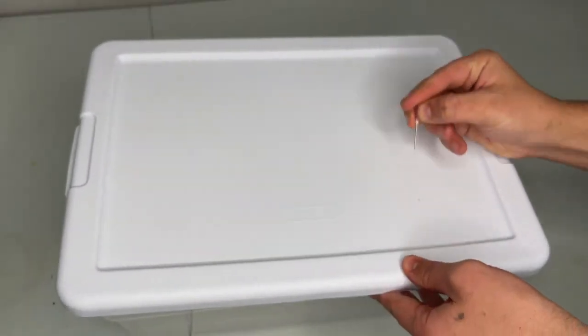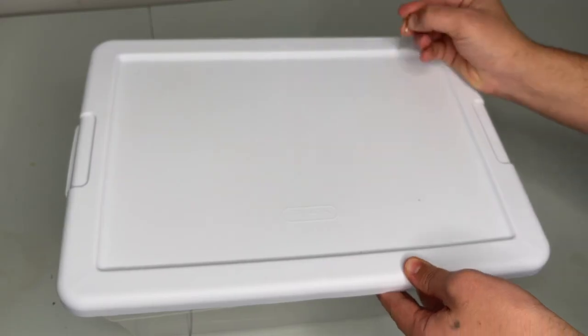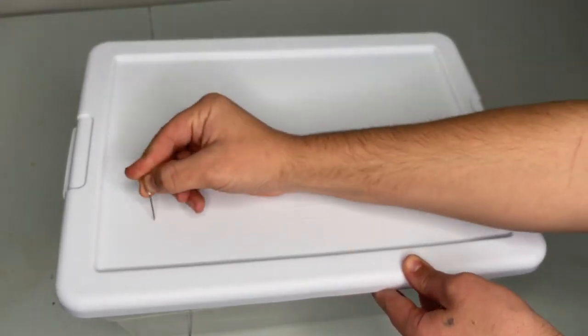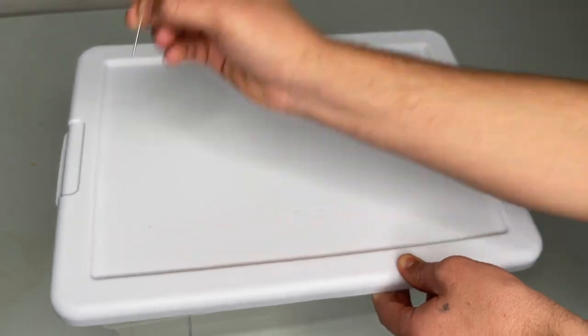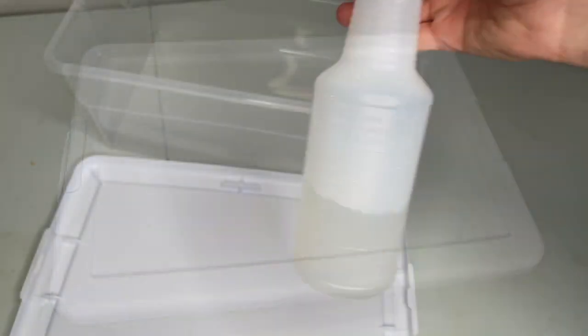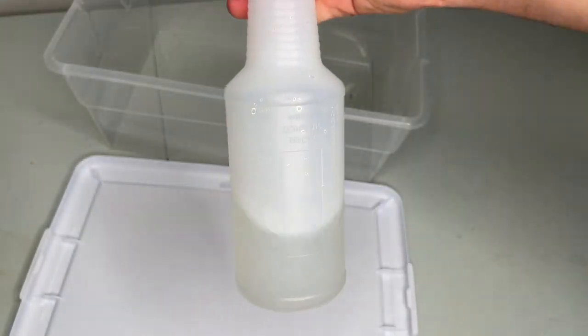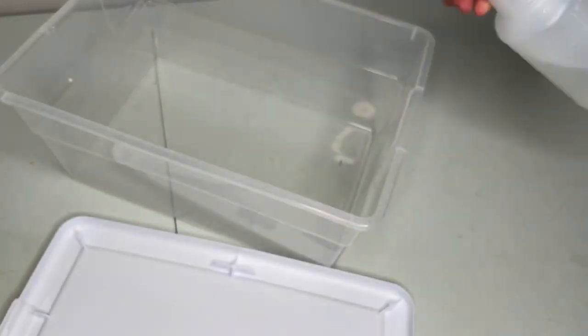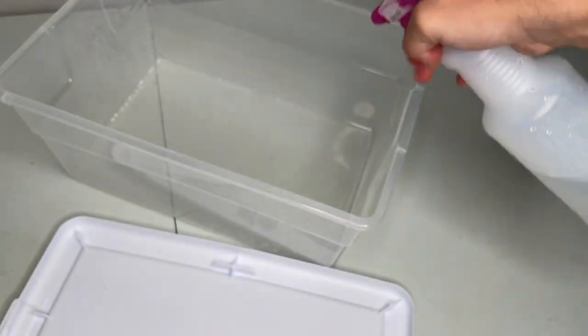Poke a hole in each of the four corners to allow for fresh air exchange. We will cover these holes after adding the rice. You will need to wipe down the bin with bleach water and isopropyl alcohol because we will not be pressure sterilizing it.